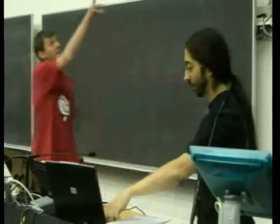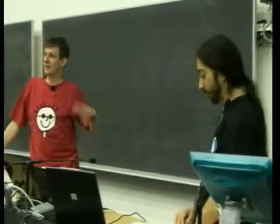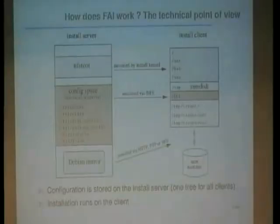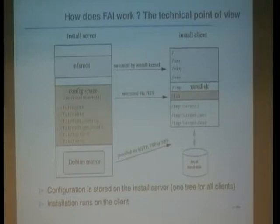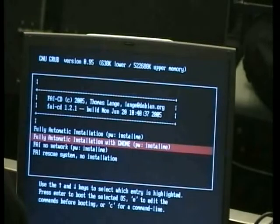This is a simple GRUB menu where Enrico can choose: automatic installation, installation with GNOME, a FAI installation without network, or the rescue system. He chooses installation with GNOME. The zero-keystroke installation applies when booting from network. A password prompt is included on the CD to prevent accidents — without it, people might blame me if they accidentally wipe their machine.